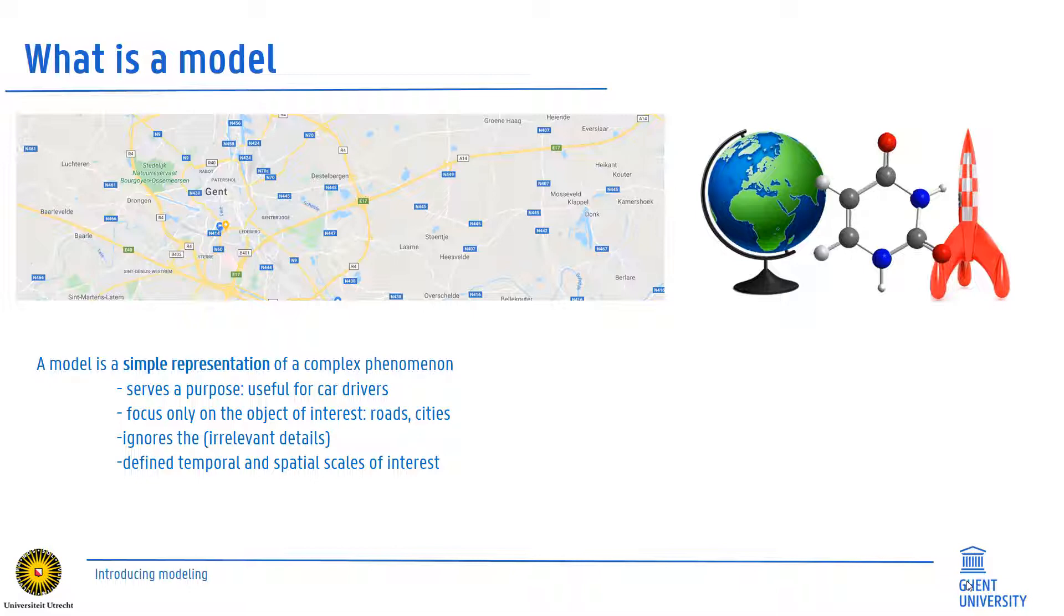They typically serve a purpose. Maps for instance are very useful to drivers. They focus only on the objects of interest and ignore irrelevant details and are developed at a temporal and spatial scale of interest.